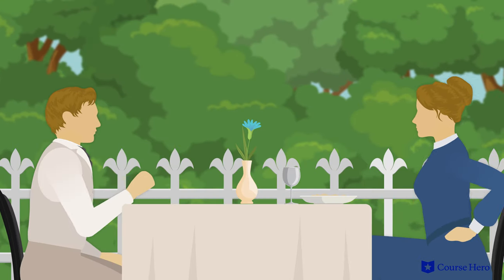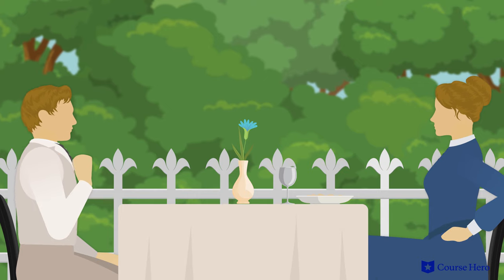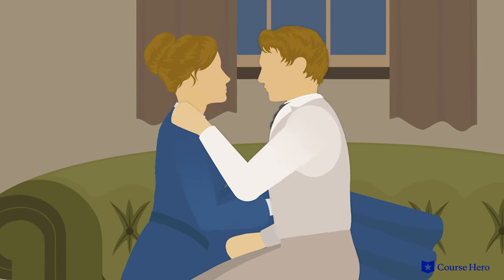Some days later, Edna runs into Robert, who has returned from Mexico. Robert is getting uncomfortable about getting too close to her and their conversation is awkward. For the next few days, he seems to avoid her. When she runs into him again in a local garden, he agrees to accompany her home and they both admit that they love one another.